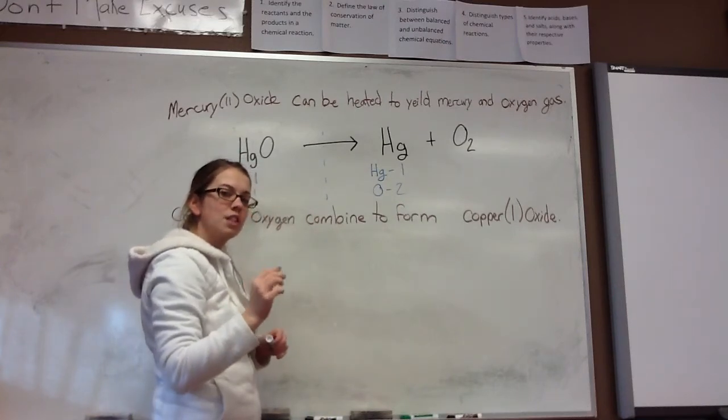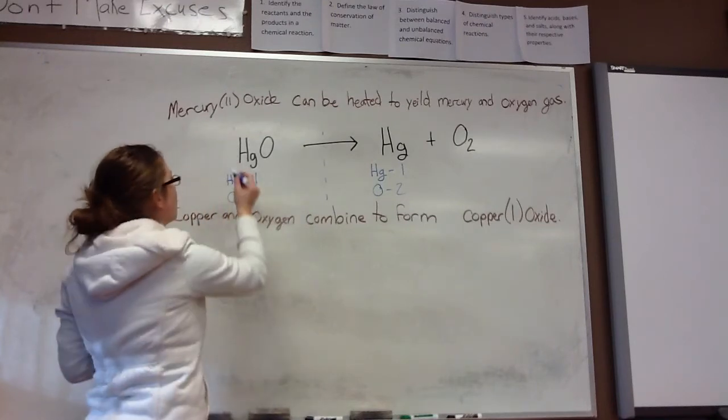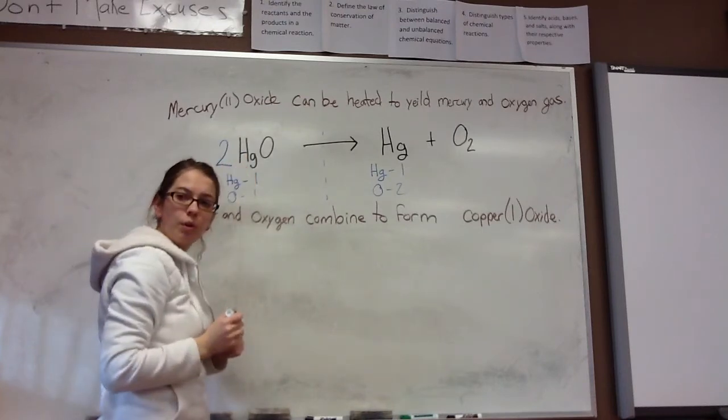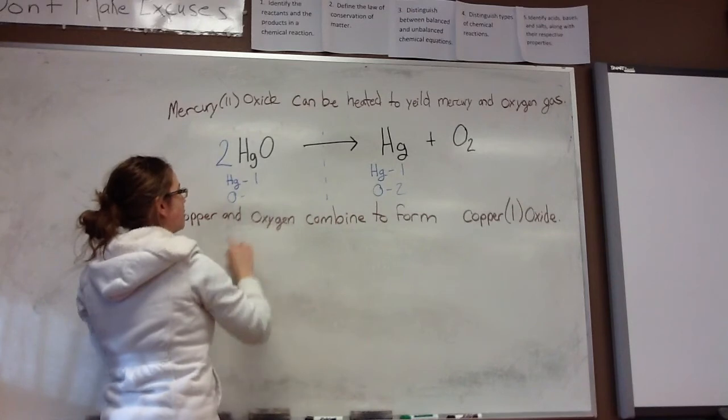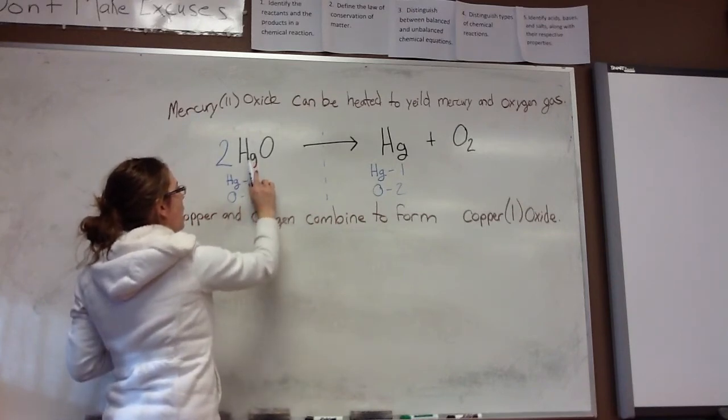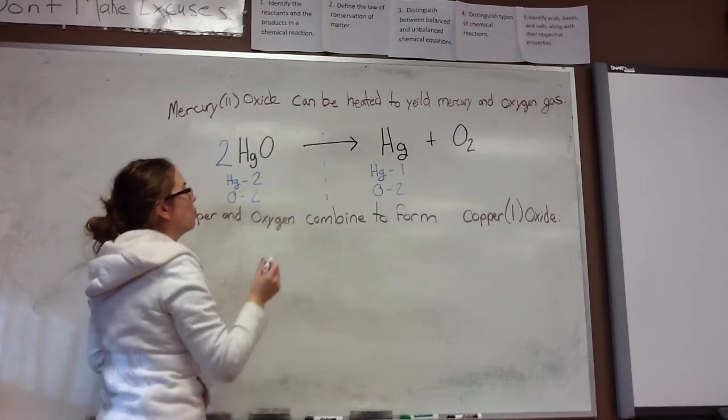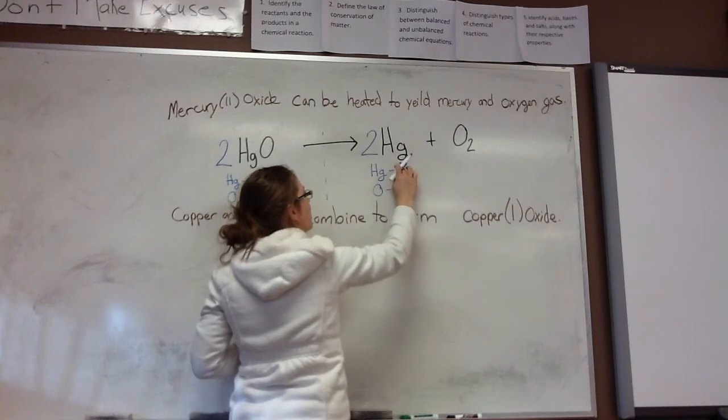Remember, we can only have coefficients in front of our symbols, our chemical symbols. And so, over here, we need to write a 2 to balance our oxygens. Now that we have two oxygens on both sides and two mercuries on this side, we need to write a 2 in front of mercury over here as well.